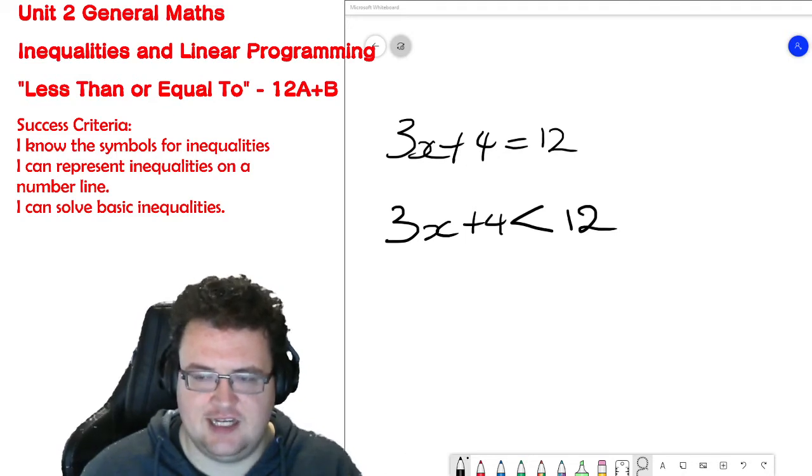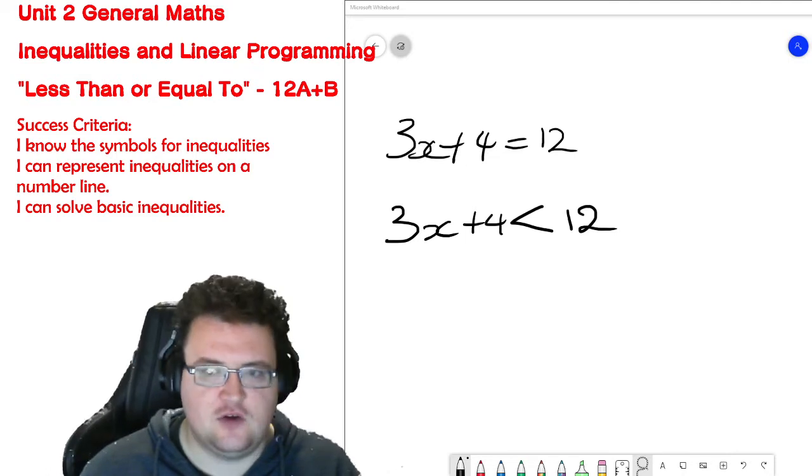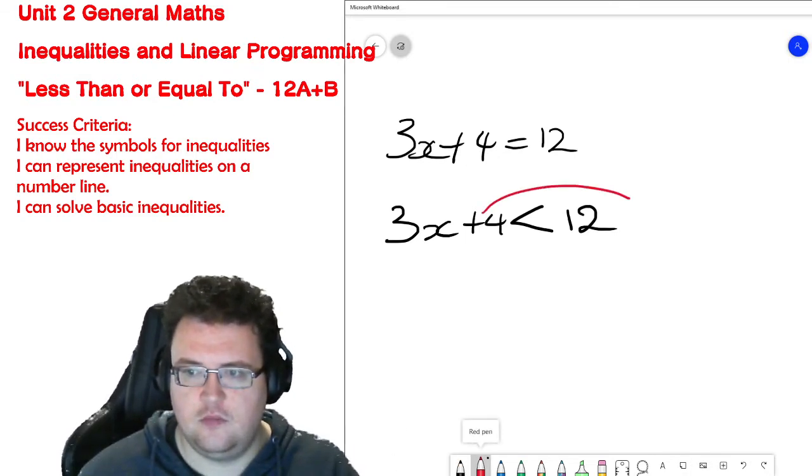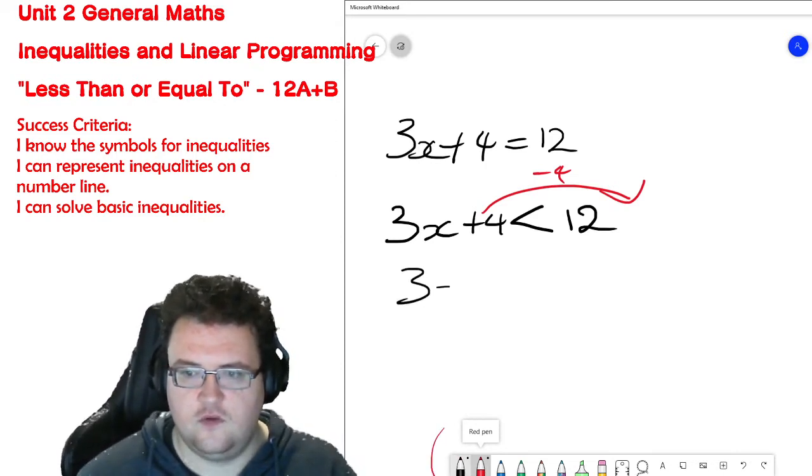So 3x plus 4 is less than 12. I need to solve it the same way I would solve any linear equation by taking the plus 4, sending it over to the other side by subtracting 4 from both sides. Therefore I end up with 3x is less than 8, and then I divide both sides by 3.